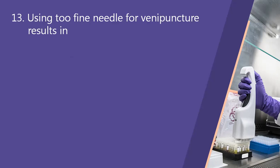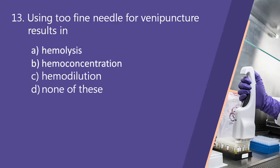Next question: using a too-fine needle for venipuncture results in? Option A, hemolysis. Option B, hemoconcentration. Option C, hemodilution. Option D, none of the above. The right answer is hemolysis. Using a small bore needle results in a large vacuum force applied to the blood, causing shear stress on the RBCs, leading to their rupture. Generally use the correct needle size, between 20 to 22 gauge.